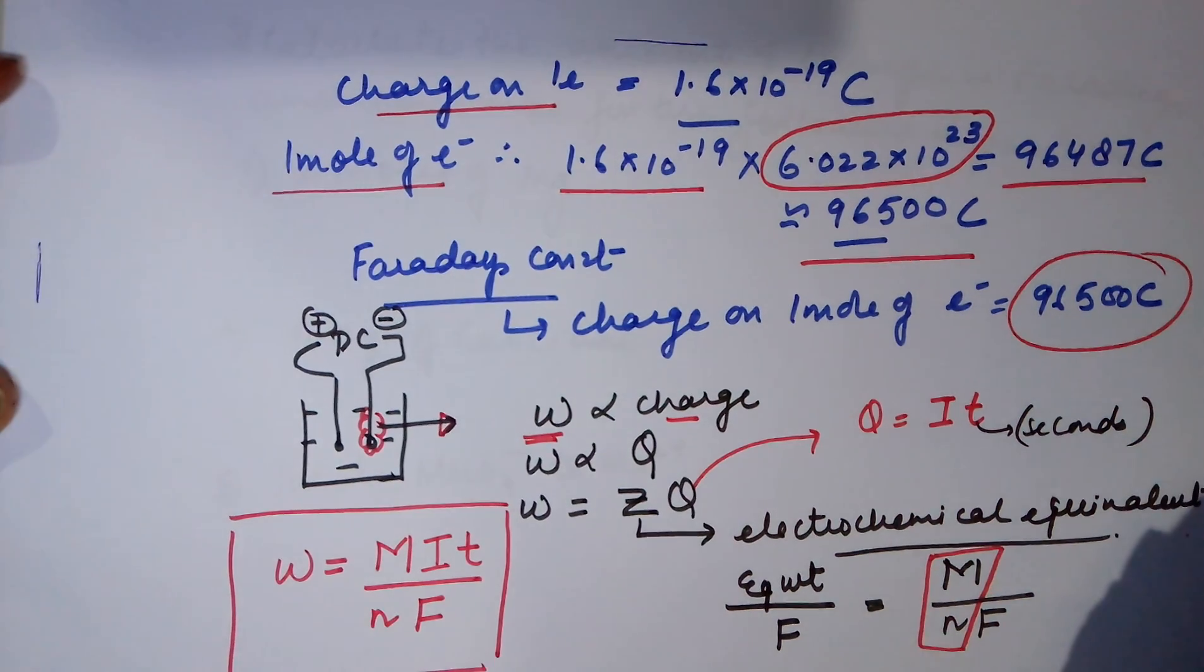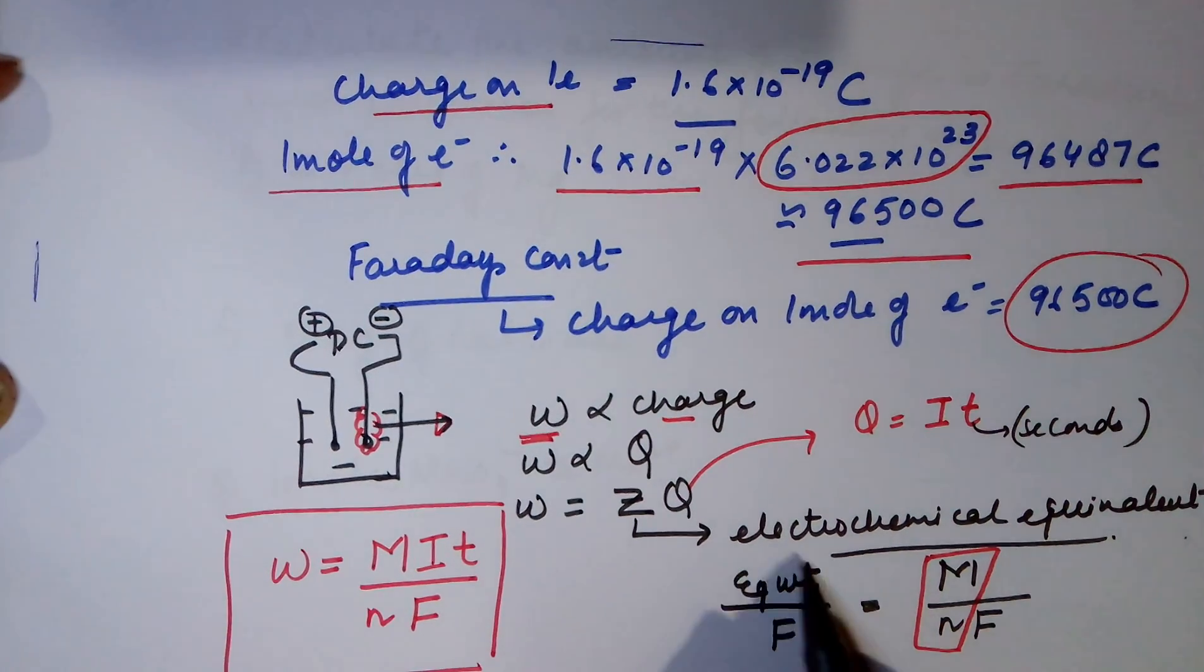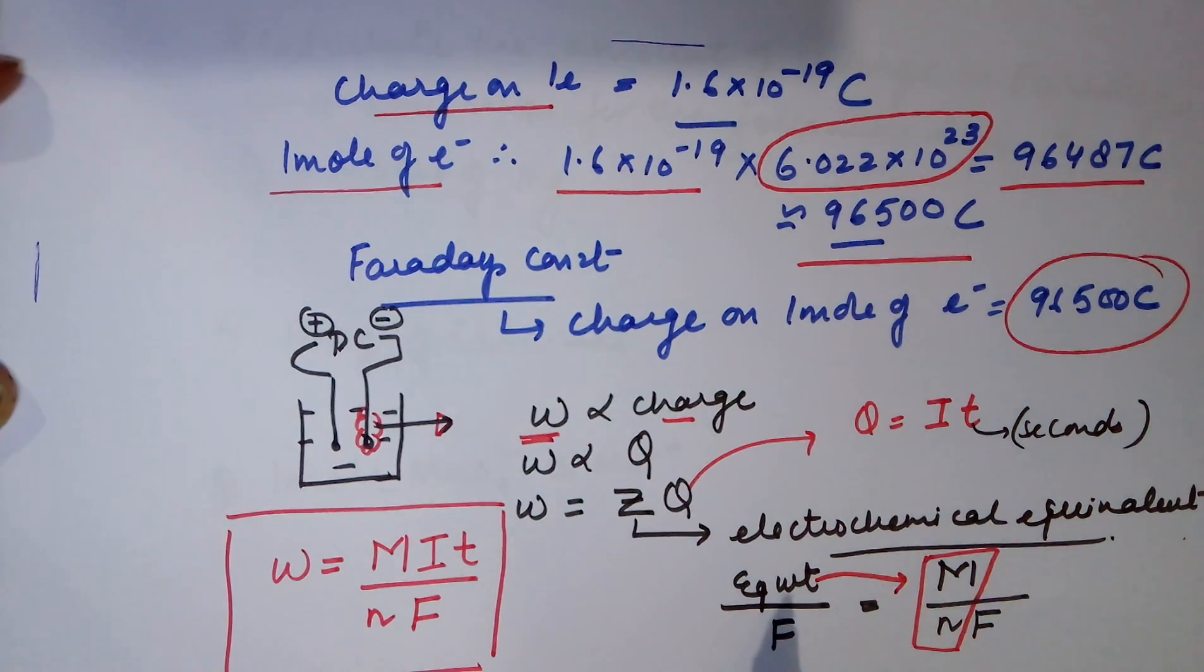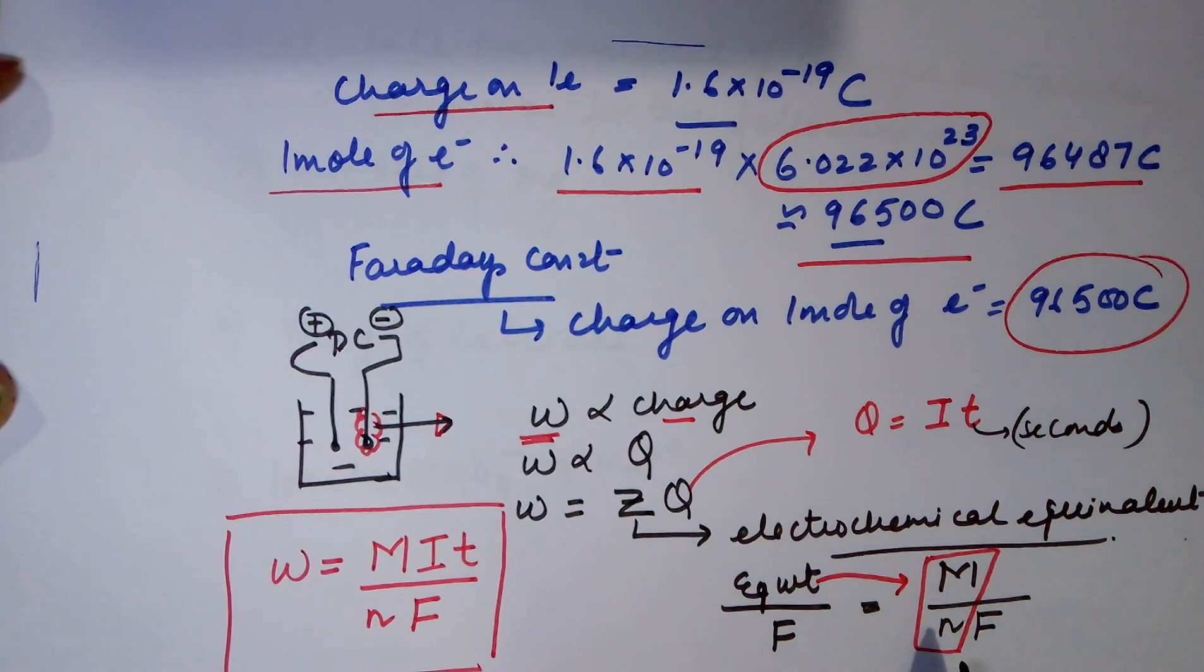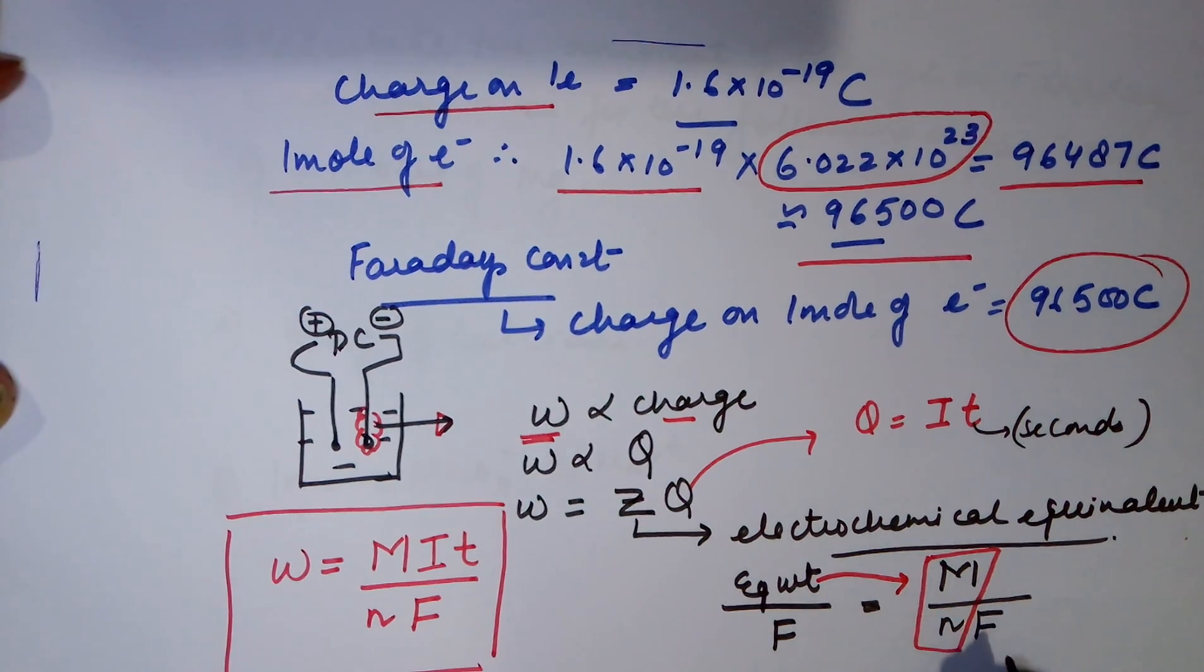This electrochemical equivalent can be easily calculated by equivalent weight of the element divided by Faraday, where Faraday is 96500 coulombs. So the formula that we end up in is atomic mass divided by N, which is your equivalent weight. Where N refers to the charge on the metal ion or the change in oxidation state.